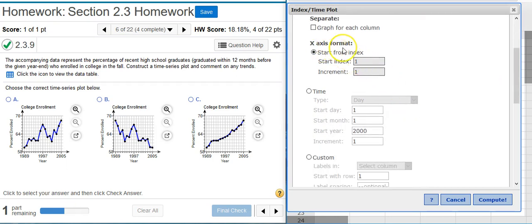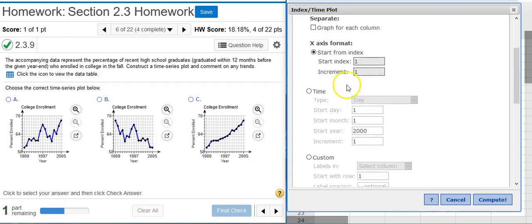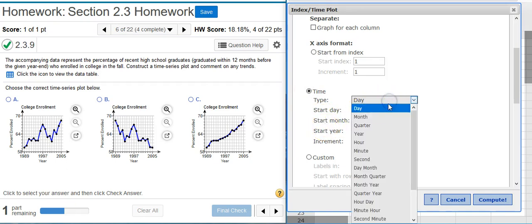Then down below, see how there's a format for the x-axis. And you've got different options that you can go with. We actually want time because our data is separated into years. So we're going to select years under type.